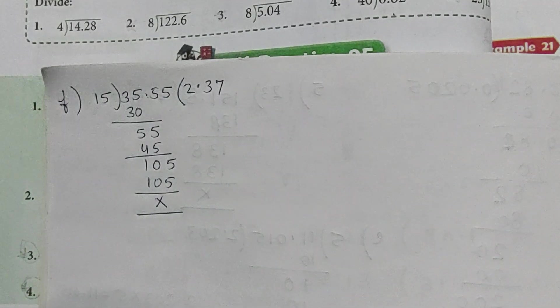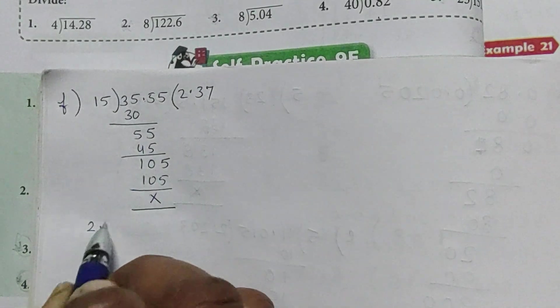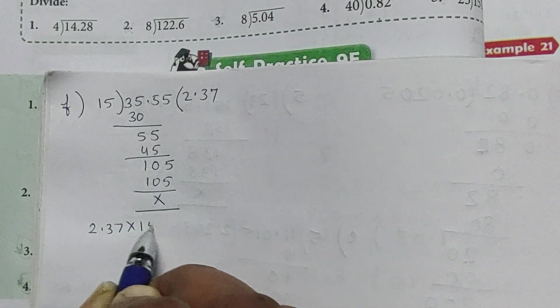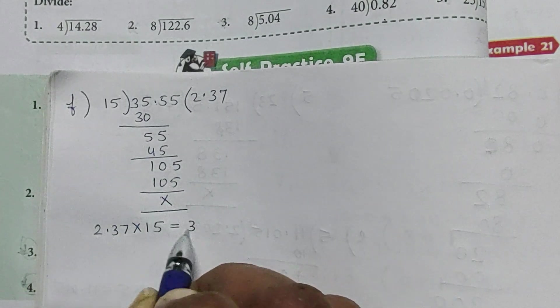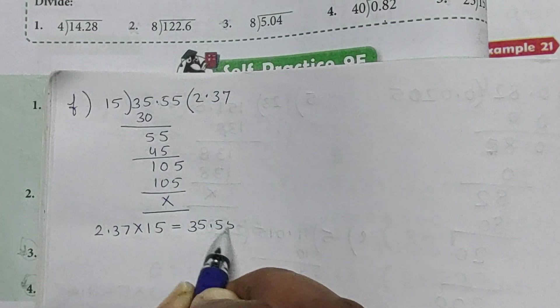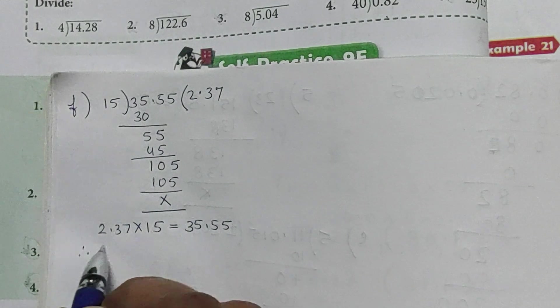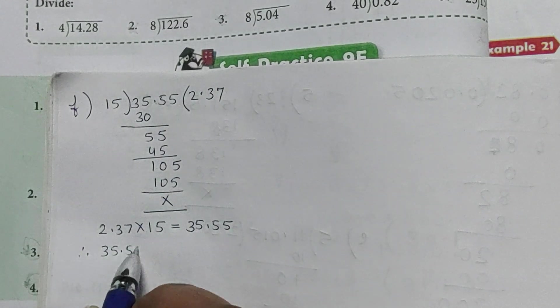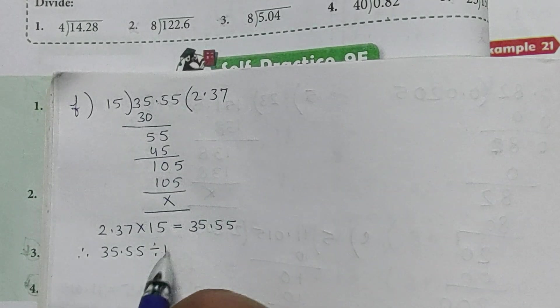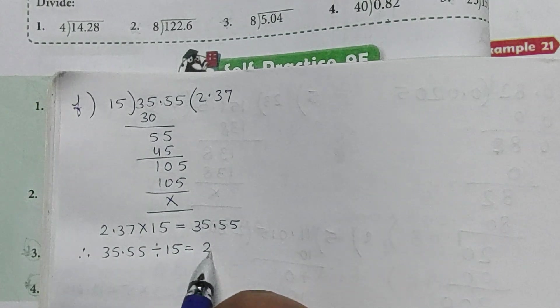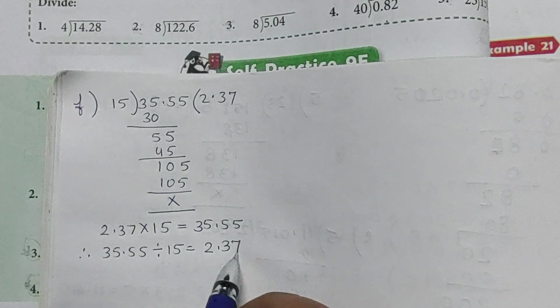55 minus 45 is 10. Again bring down 5. 15 into 7 is 105. Now we have to check. So 2.37 multiplied by 15 is equal to 35.55. Therefore, 35.55 divided by 15 is equal to 2.37.